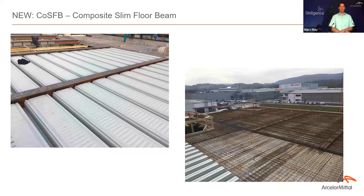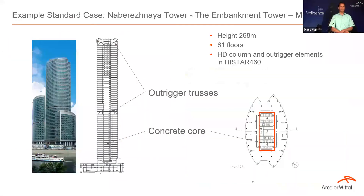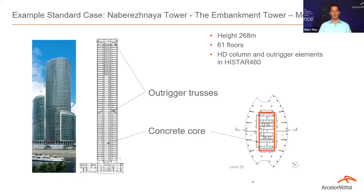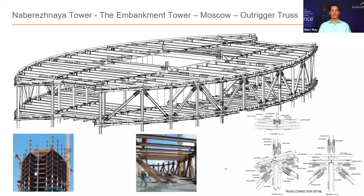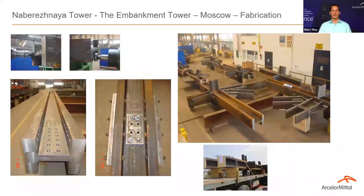Here is an example: a high-rise in Moscow where the columns were made of Histar 460. It is a typical layout with a concrete core and surrounding steel structure stiffened with outriggers to bring wind loads down to the foundation. The outriggers as well as the columns are made from HD sections in Histar 460. The connections are all bolted — very effective. You can also see the fabrication and test assembly at the job site to ensure all pieces will fit correctly when delivered by truck.